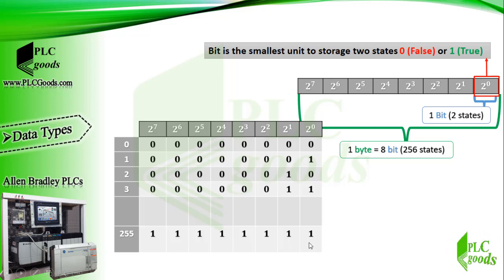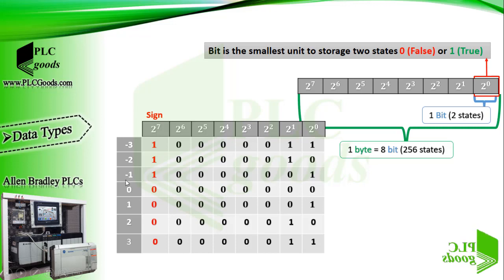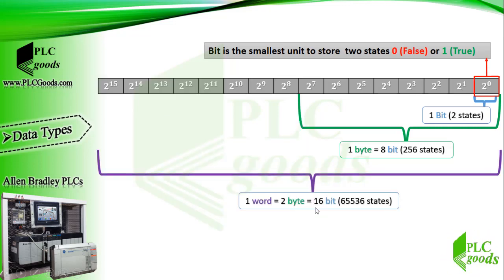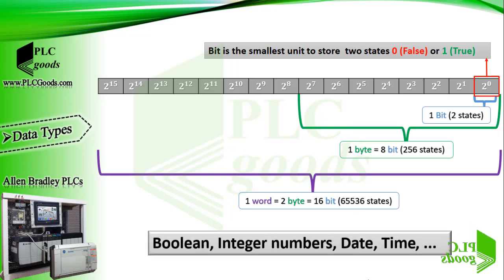We can use the seventh bit to store the number sign: zero for positive and one for negative numbers, allowing us to store negative values as well. These numbers can represent an electrical signal value or industrial parameters such as motor speed or water level. For more precision, we can use two bytes called a word, which provides 65,536 states. Based on defined standards and number of bits, different data types can be stored in PLC memory, like boolean data, integer numbers, dates, and other required data.